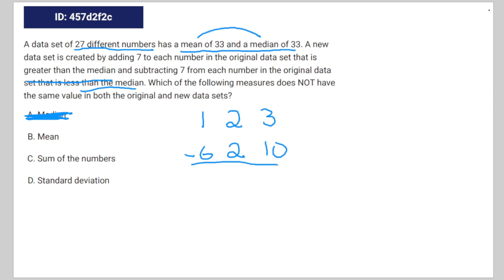And if we were to take the mean of this data set, that would be the sum of these numbers divided by 3. And since the sum of the numbers are equal and you still have the same amount of numbers, the mean is the same.